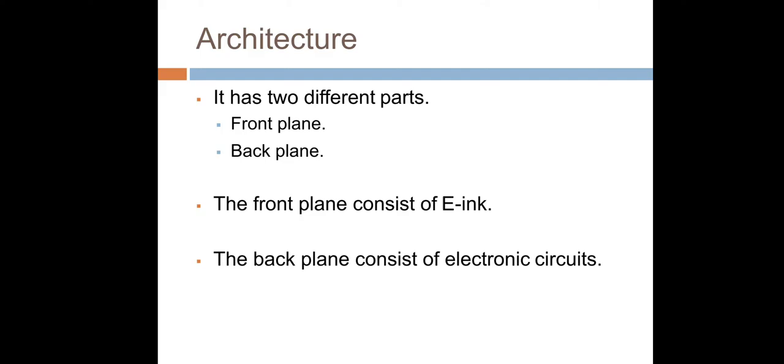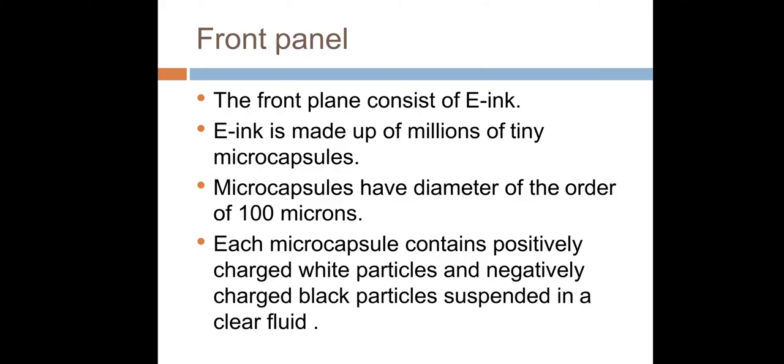Architecture. So basically electronic paper display has two different parts: front plane and back plane. The front plane consists of electronic ink and back plane consists of electronic circuits.